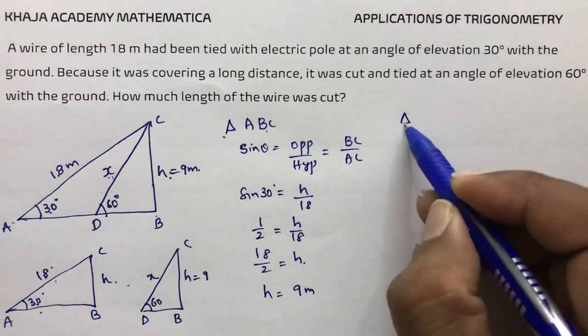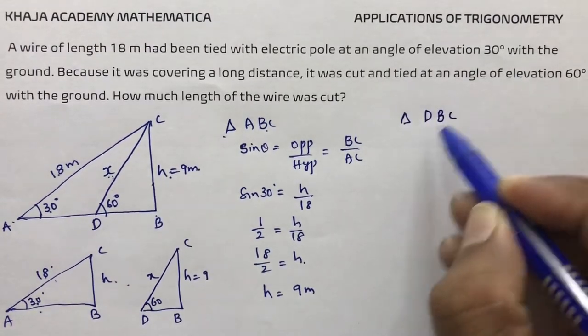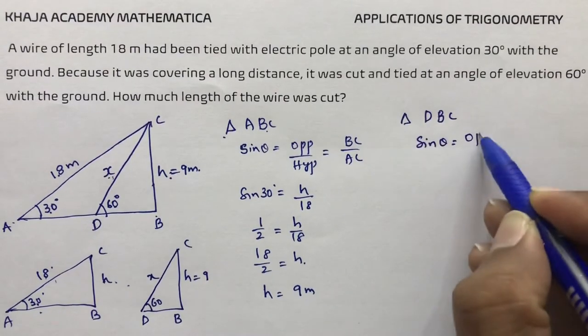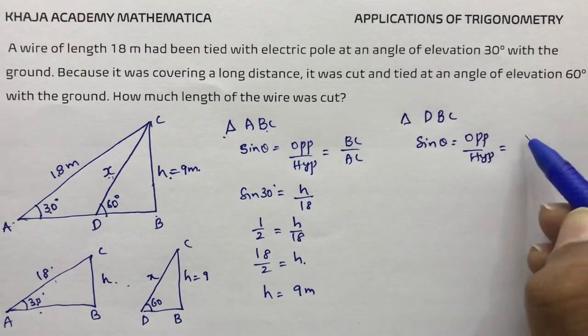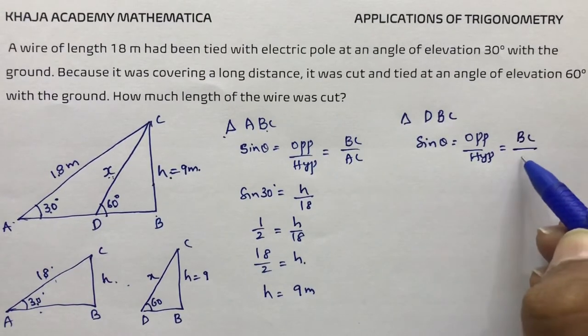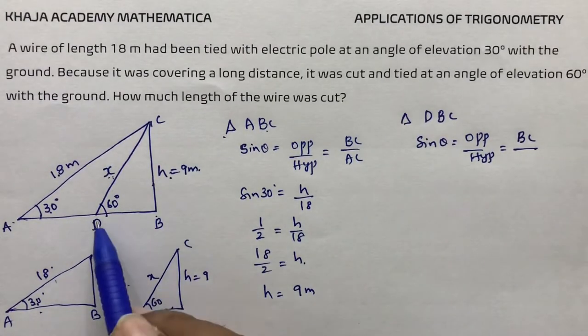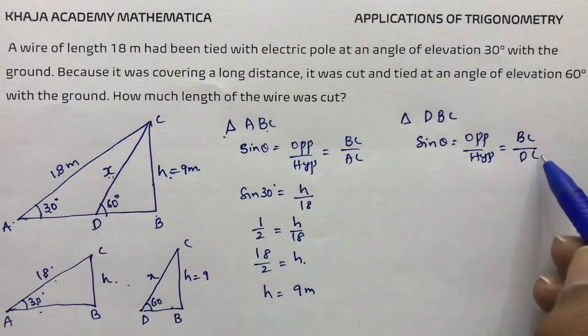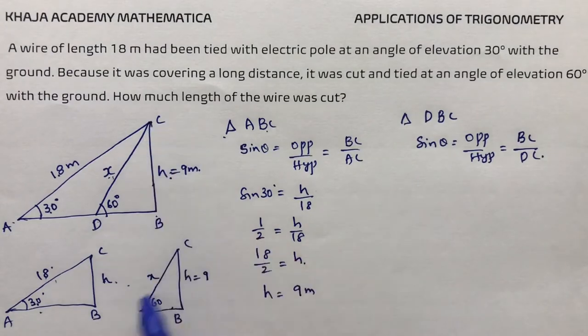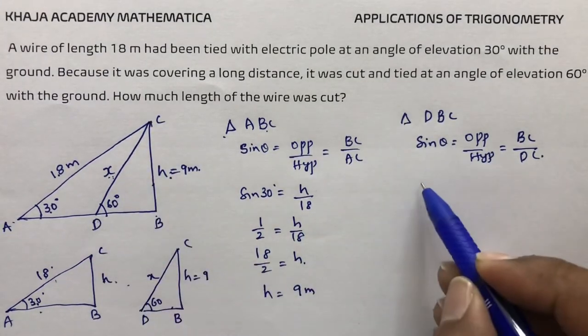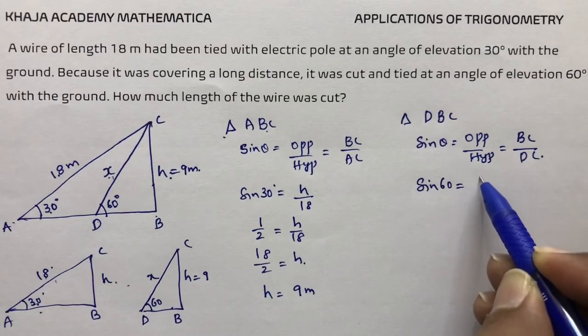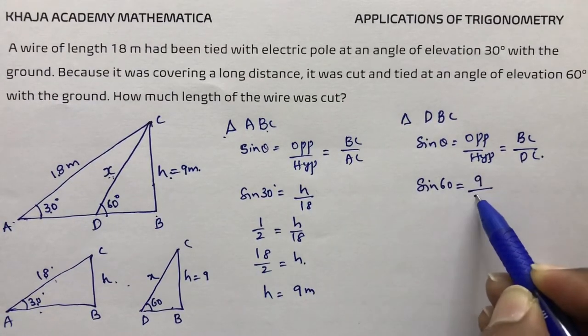In triangle DBC, sin theta is opposite by hypotenuse. The opposite is BC which is 9, and the hypotenuse is DC which is x. So sin 60 equals 9 by x.